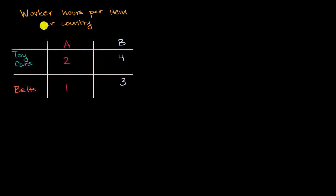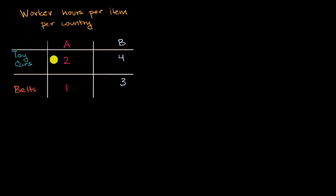Right over here, we have a table that shows us the worker hours per item per country. So instead of this being an output table where we say how much of, say, toy cars can a worker in country A produce per day, here we're saying how many hours does a worker in country A take to produce a toy car. In country A, it is two hours — that is the input. We're saying how many hours per car we need to put in to produce it. Similarly, we have the input required in country A to produce a belt: one hour of worker time.